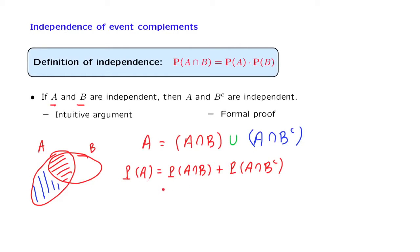Using independence, the first term becomes probability of A times probability of B. And we leave the second term as is.